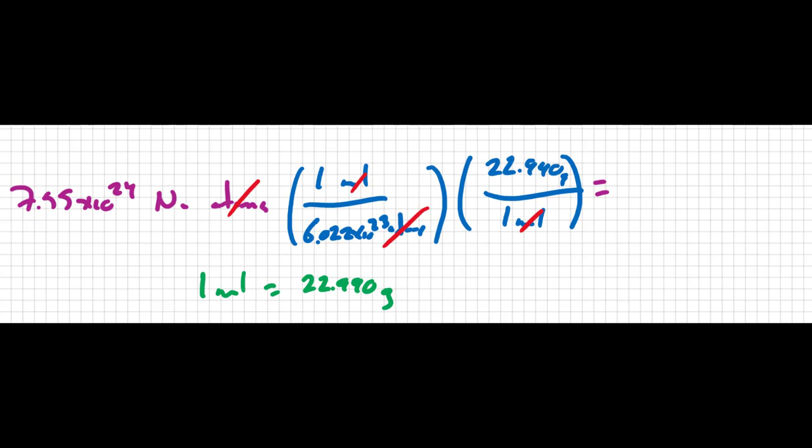And when all is said and done, if I round this to three sig figs, I'm going to get 288 grams of sodium.